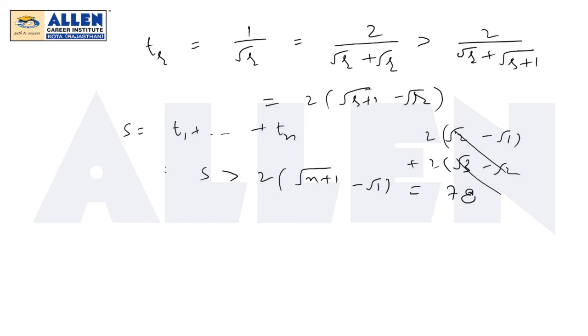So we get both lower and upper limit: we find S is greater than 78 and S is less than 79. Which means its greatest integer must be 78. That is the question. Greatest integer of S that we need to find, that is 78. So that is our answer.